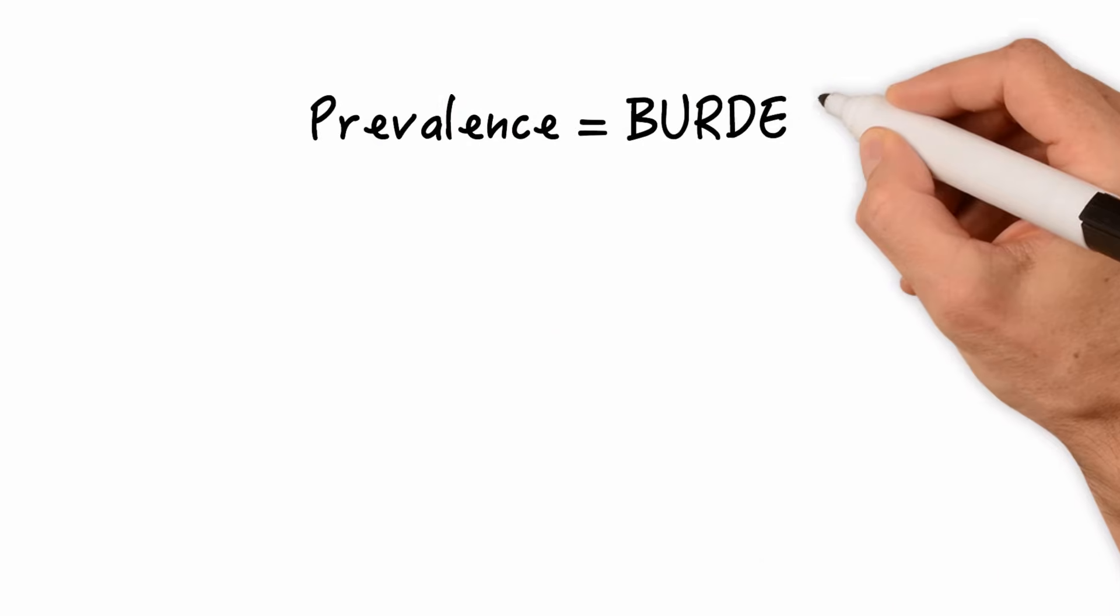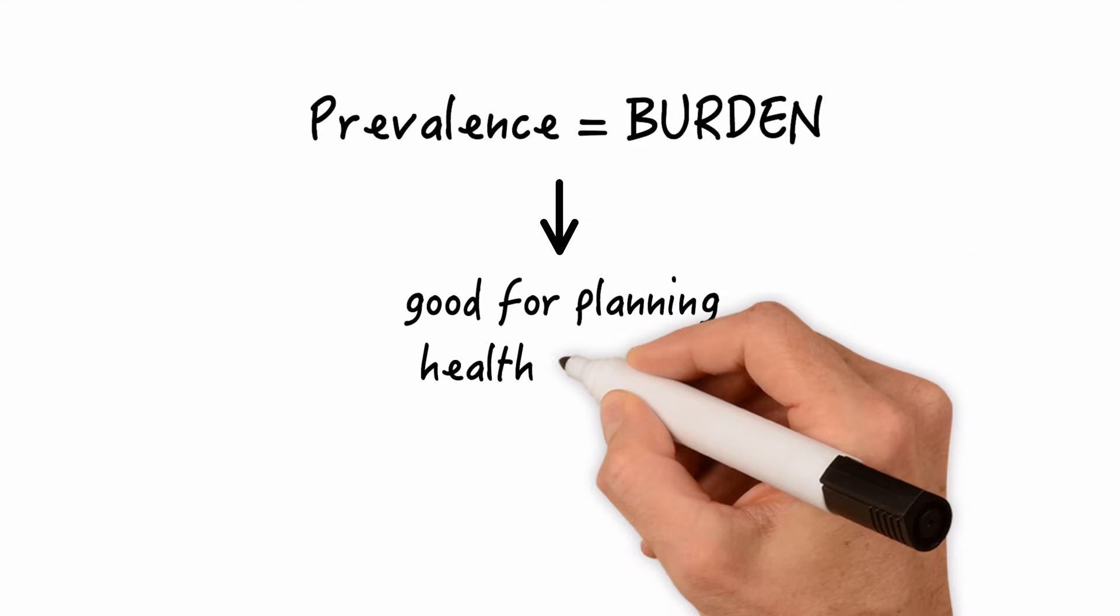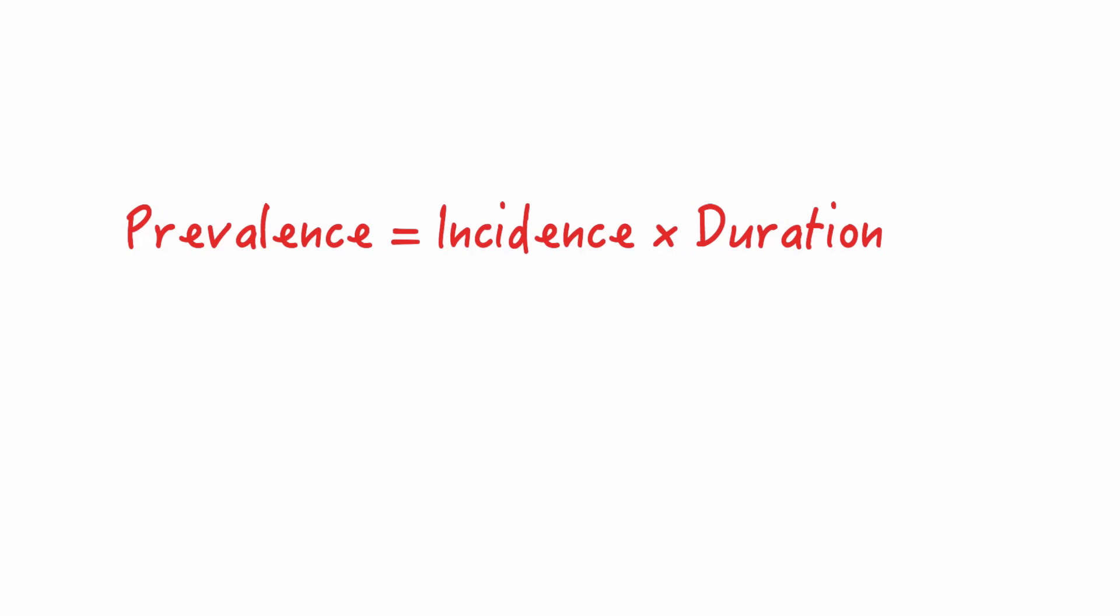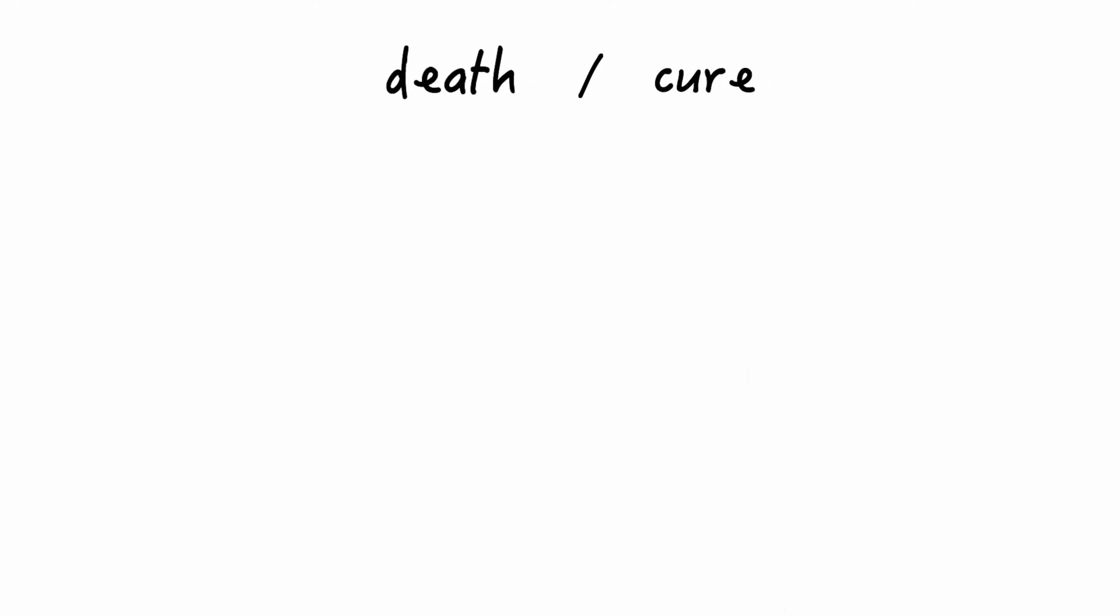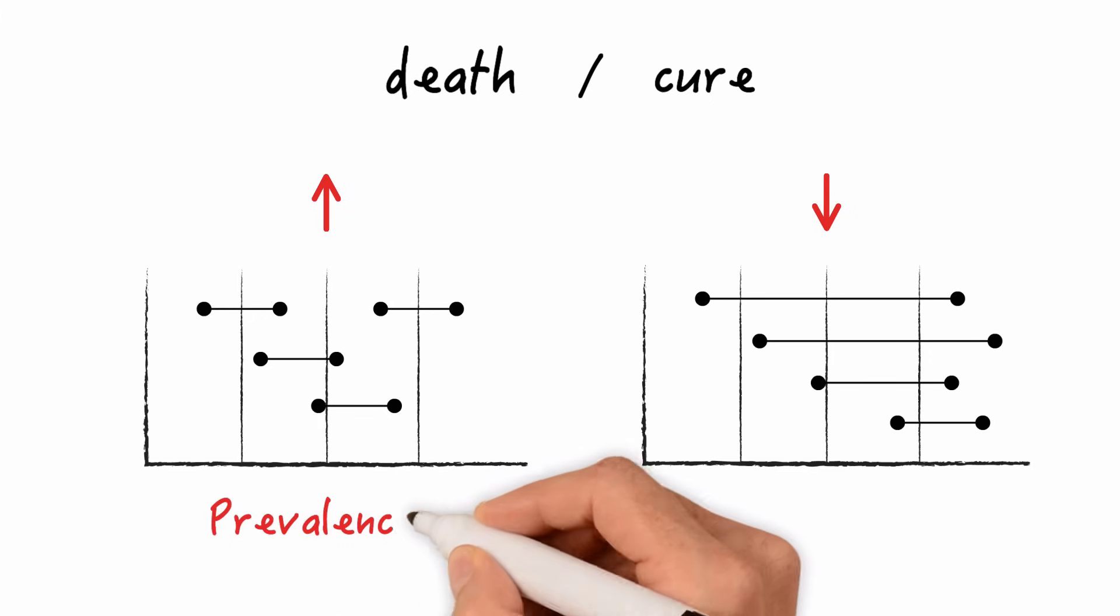So prevalence is a measure of disease burden. As such it is a great tool for planning the allocation of health services. So prevalence is incidence times duration and duration is determined by the death rate or the cure rate. If the death rate or the cure rate go up then the disease duration will be shortened. If death rate and cure rate go down disease duration will be prolonged. At most points in time prevalence will be lower with shorter duration and higher with longer duration of disease.